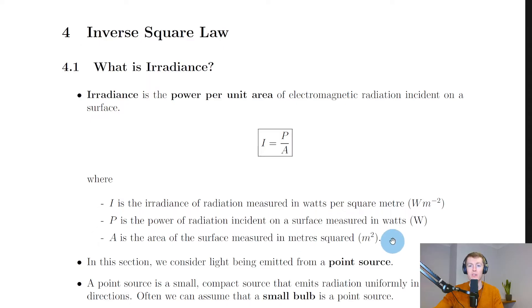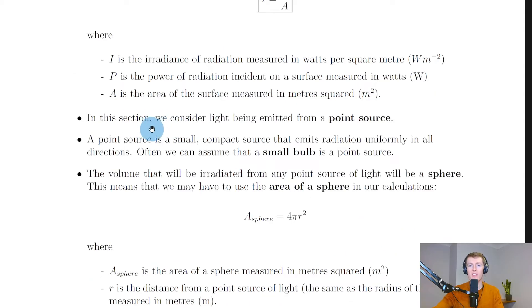In this section we consider light being emitted from a point source. A point source is a small, compact source that emits radiation uniformly in all directions. Often we can assume that a small bulb is a point source, and it tends to be that the smaller the bulb you use, the more like a point source it actually is.